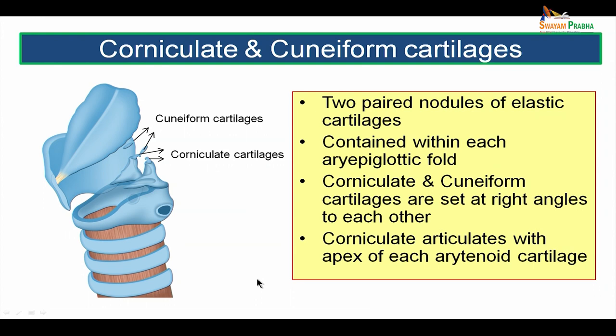The corniculate and cuneiform cartilages are two paired nodules of elastic cartilage. They are contained within each aryepiglottic fold. The corniculate and cuneiform cartilages are set at right angles to each other; however, the corniculate articulates with the apex of each arytenoid cartilage. The arytenoid cartilage's apex articulates with the corniculate cartilage, and the cuneiform cartilages are seen superior to them.